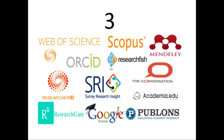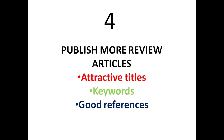Tip number three: you need to have your profile on different scientific platforms such as Web of Science, Scopus, ResearchGate, Google Scholar, Academia, Publons, and ORCID IDs. At the end of this video, I will show you the different scientific platforms and their benefits, so please watch the video till the end.